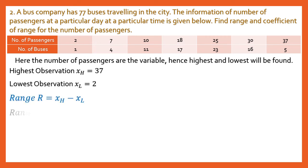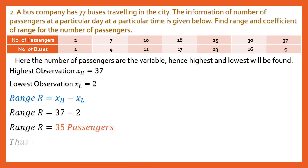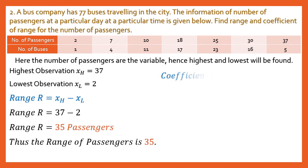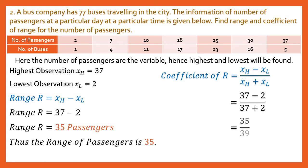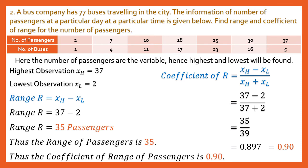Range = 37 − 2 = 35 passengers. The coefficient of range = (37 − 2) / (37 + 2) = 35 / 39 ≈ 0.897, which rounds to 0.90. Statement: The range of passengers is 35 and the coefficient of range is 0.90. Whether it's ungrouped data or grouped data, the steps for calculating range remain the same.